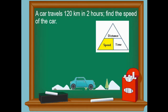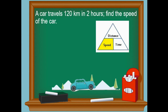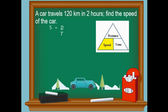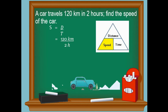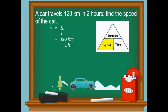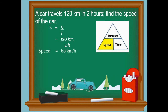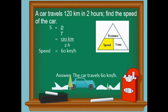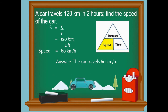Let's go back to our problem. A car travels 120 kilometers in two hours — find the speed of the car. Using the formula: speed equals distance divided by time. Our distance is 120 kilometers, our time is two hours. 120 divided by 2 equals 60 kilometers per hour. Our final answer: the car travels 60 kilometers per hour.